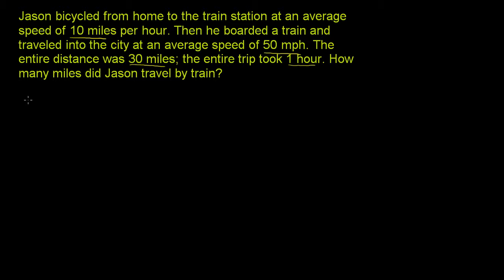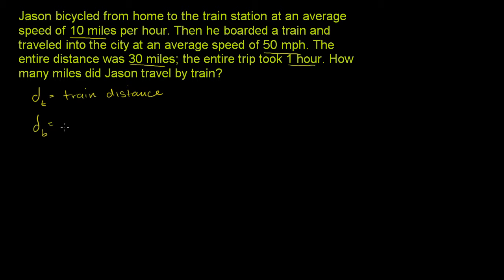So let's write that down as a variable. Let's say d with a small subscript t — that is the distance by train. And let's have a d with a little subscript b — that is the bike distance.